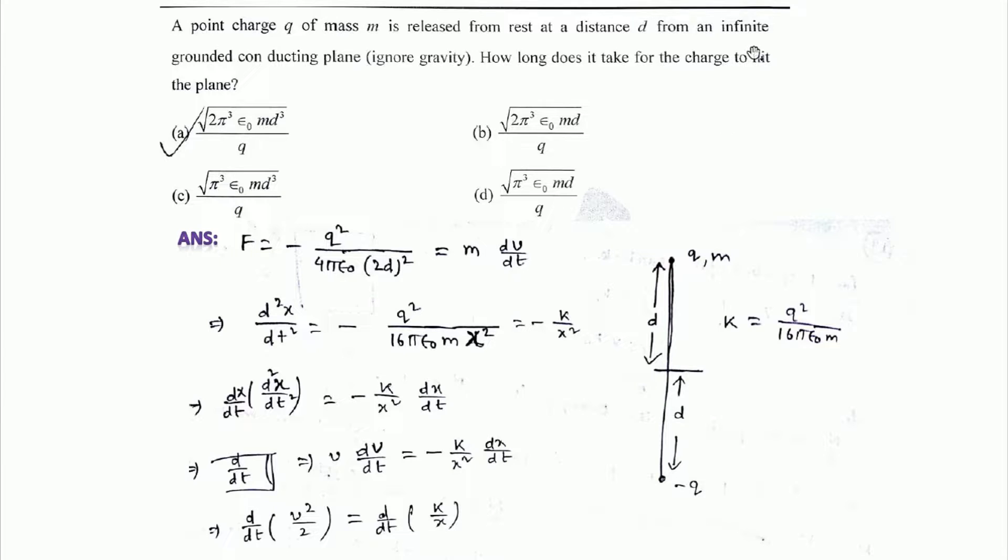If a charge is placed in front of an infinite grounded conducting plane, then an image charge will be induced which will have the same properties but of negative nature. So minus q charge will be induced exactly at the same distance d.